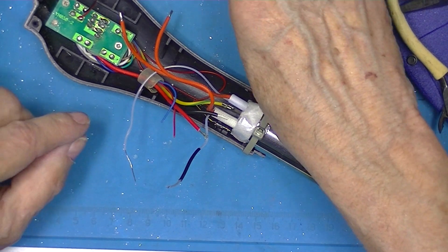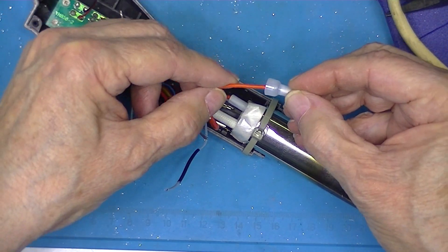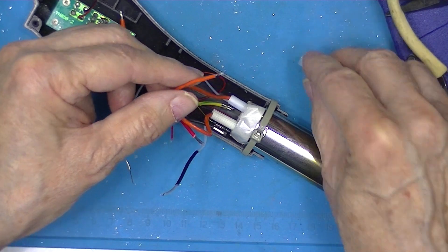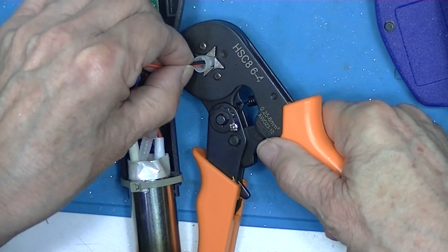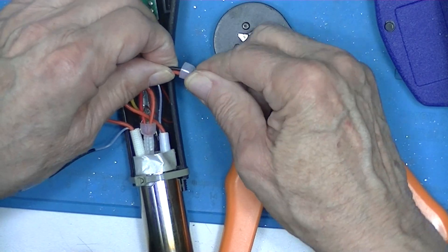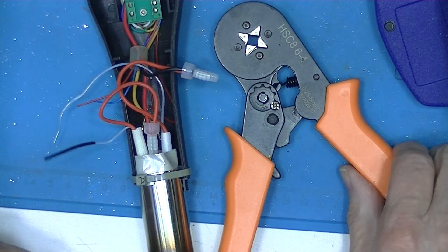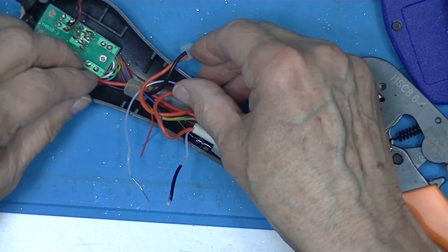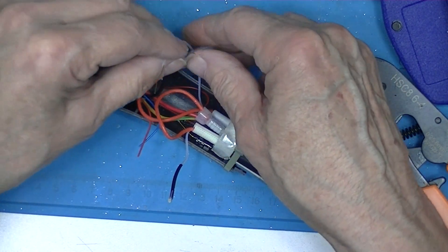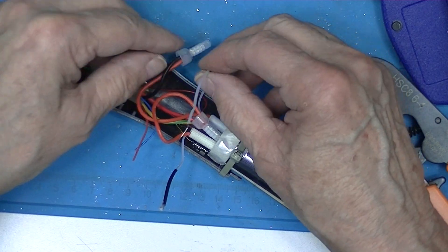The power wires - I'm just going to crimp. There's no polarity to them that I can see. So that takes care of the power wires.